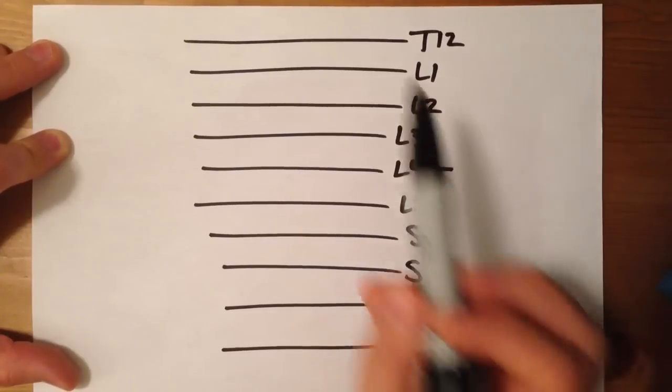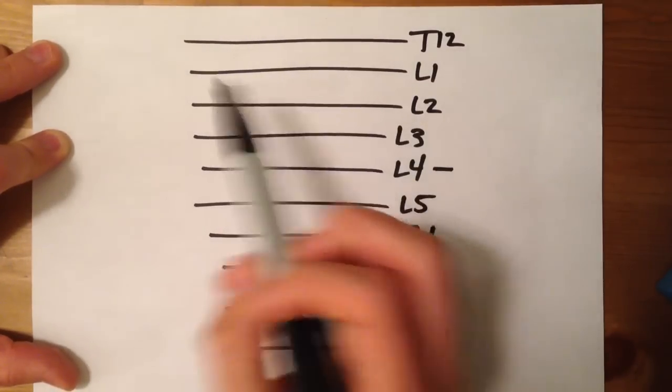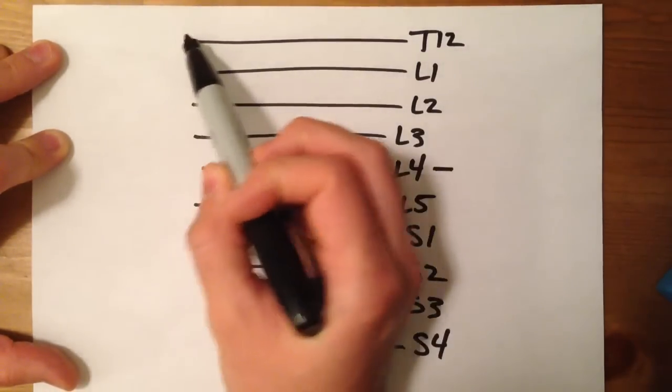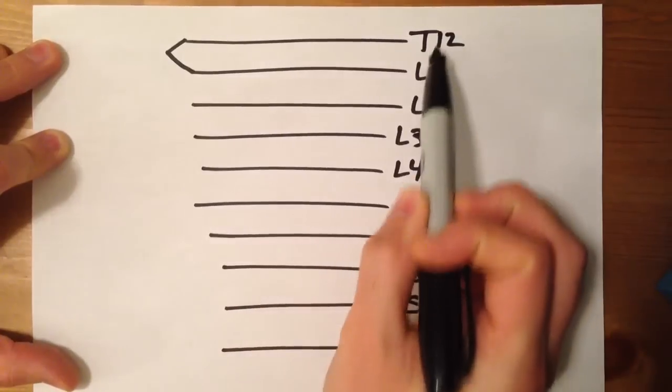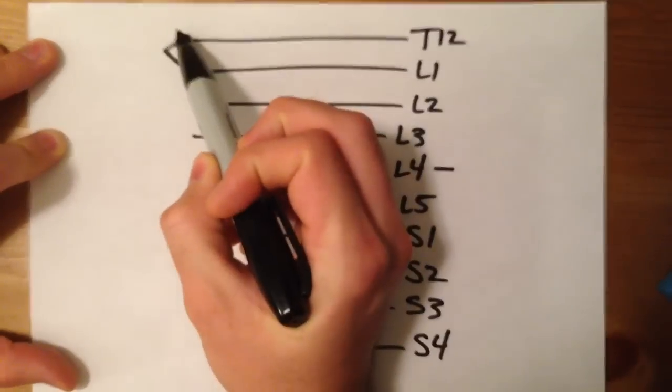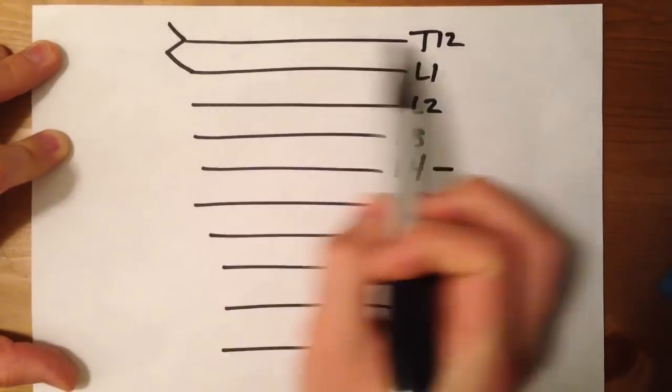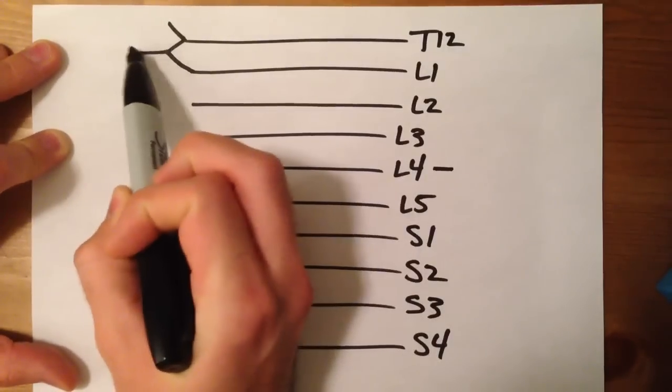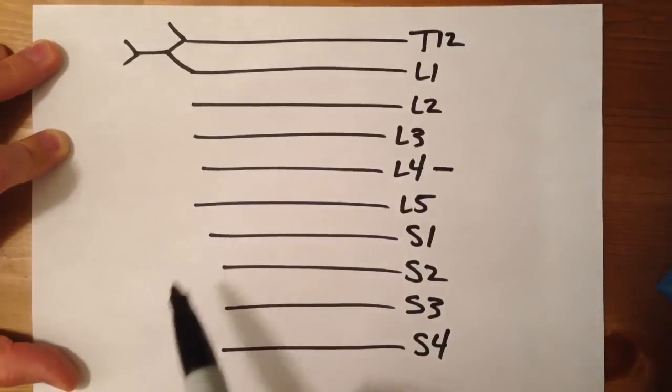Okay, so at T12, we're going to make a little conjunction between T12 and L1, and we're also going to leave a little branch like that. Now, from the T12 and L1 junction, we're going to make a little V.